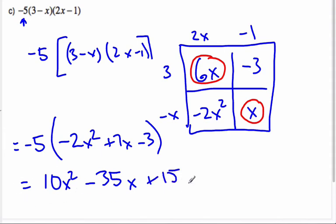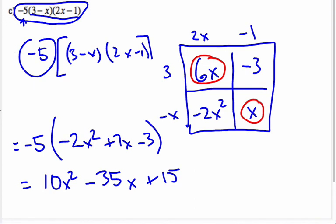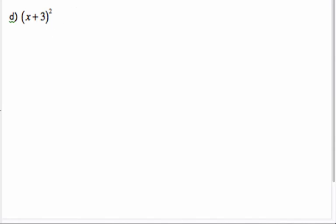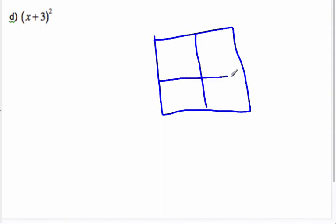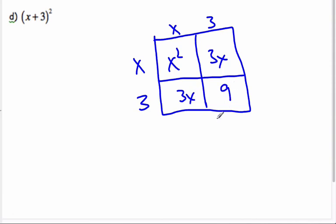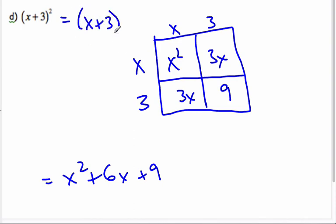So 10x² - 35x + 15 is our expanded form of that whole scenario — we multiplied the binomials first and then by the constant at the end. Next we have (x + 3) squared. Squared makes me think of a box that's square — a length and width that are exactly the same. So x + 3 is both the length and the width. Filling in the areas: x², 3x, 3x, and 9. So the final result is x² + 6x + 9. We have to make sure there are squares here — we're multiplying it by itself.